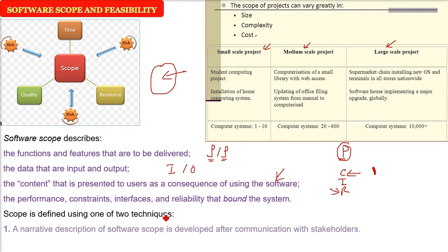The scope is defined using mainly two techniques. We have a narrative description of software scope, and this comes out when you have proper communication with your stakeholders and end users. This is the first way.